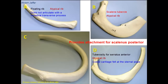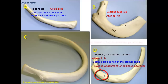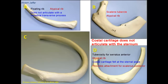Regarding scalene muscle attachments: in the neck there are three scalene muscles. Scalenus anterior is attached to the scalene tubercle on the first rib. Scalenus medius is attached to the superior border of the first rib, behind the groove for the subclavian artery. Scalenus posterior is attached to the second rib. For the feature 'costal cartilage does not articulate with the sternum,' this means a floating rib — either the 11th or 12th rib.